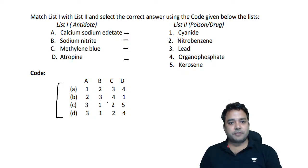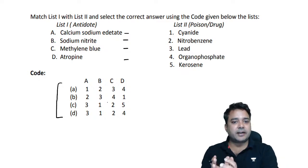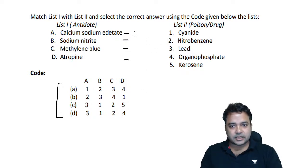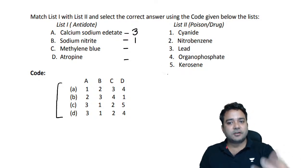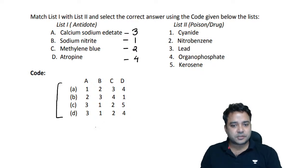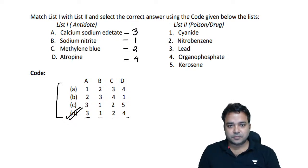Regarding antidotes and toxicology, I will keep a special session on the academy app most likely next weekend. EDTA goes with lead. Sodium nitrite for cyanide. Methylene blue for methaemoglobin poisoning — nitrobenzene leads to methaemoglobinaemic conditions. There is no specific antidote for kerosene poisoning; we do symptomatic management. Correct answer goes with 3-1-2-4, option D.